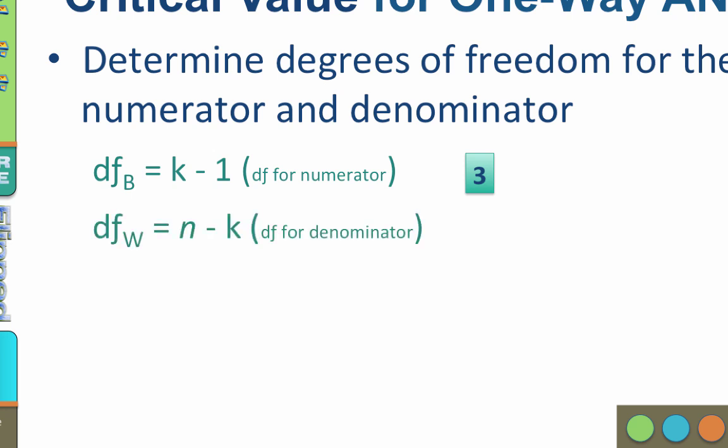Degrees of freedom within equals n minus k, where n is the total number of participants and k is the total number of categories. This is the degrees of freedom for the denominator. The degrees of freedom within would be the total number of participants, 20, minus the total number of categories, 4, or 16.